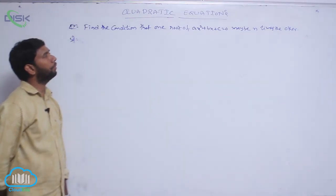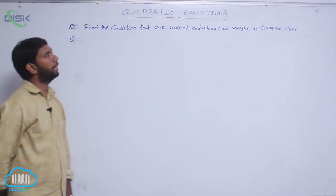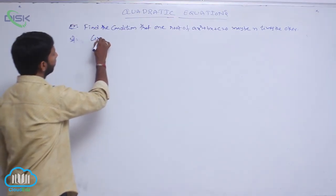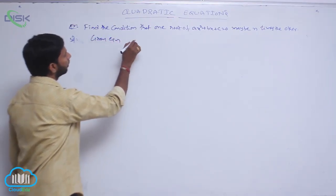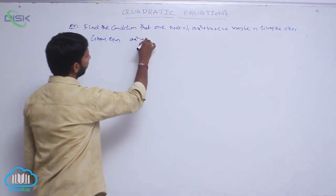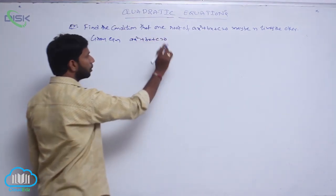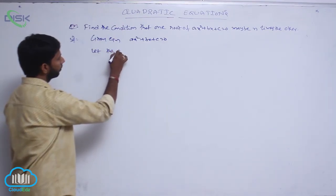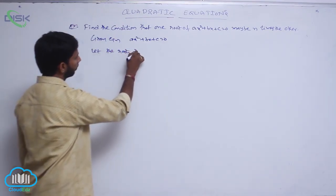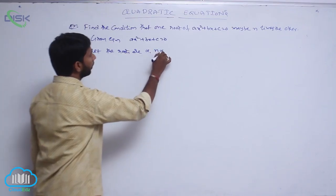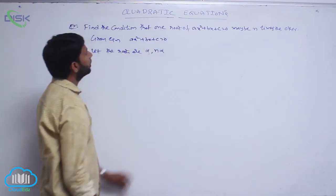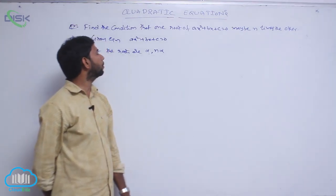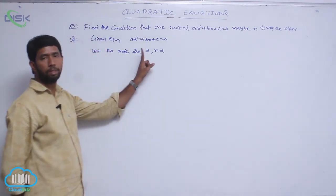Find the condition that one root of the equation is n times the other. The given equation is ax² + bx + c = 0. Let the roots be alpha and n·alpha, where one root is alpha and the other root is n·alpha.